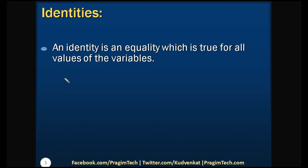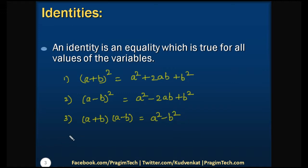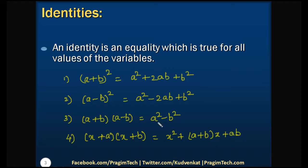The first identity, which I hope you are very familiar with, is: (a + b)² = a² + 2ab + b². The second identity is: (a - b)² = a² - 2ab + b². The third one: (a + b)(a - b) = a² - b². And the fourth: (x + a)(x + b) = x² + (a + b)x + ab. I hope you are able to recollect these identities.